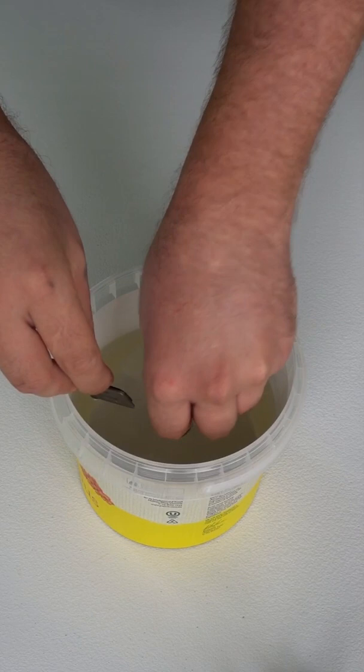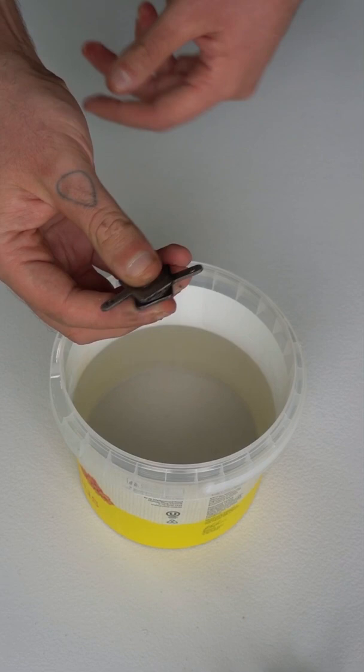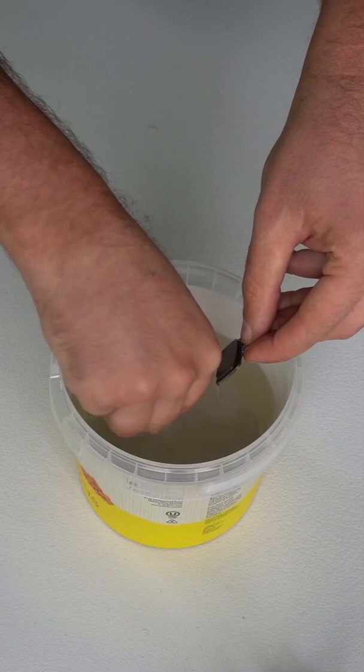All we're going to do is just wet the pads and then gently rub them together. This will abrade them slightly and take that glaze off the surface, and they should be good as new.